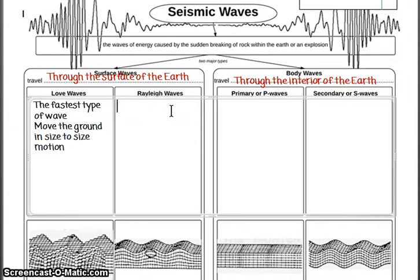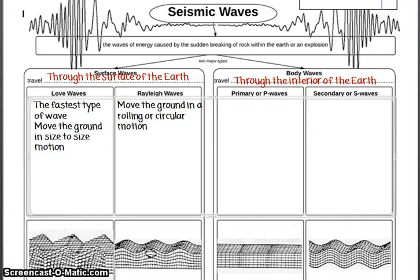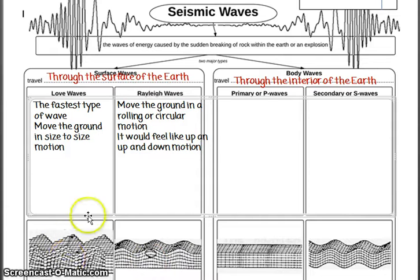The second type of surface wave is called Rayleigh waves. These also travel through the surface of the earth, but they move the ground in a rolling or circular motion. The way this would feel to a person is like an up and down motion — sort of like a wave on the water circling around and around, as you can see in the picture. So those are the two major types of surface waves: love waves moving back and forth, and Rayleigh waves with a rolling motion.